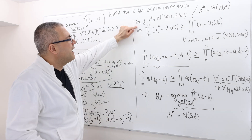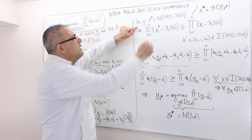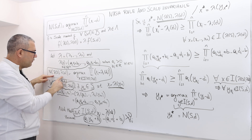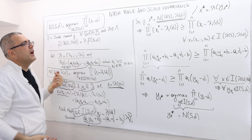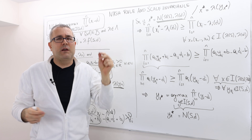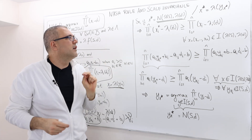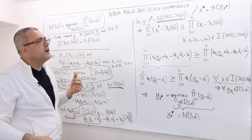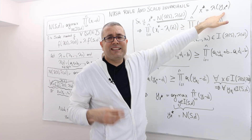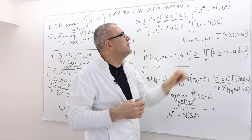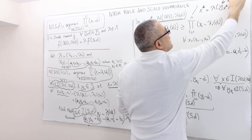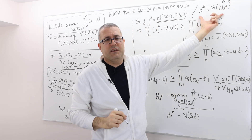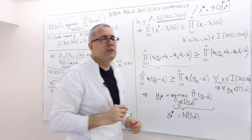Now let's give a name to our Nash solution. The Nash solution of the transformed game — let's call that payoff vector x star. Because of our argument, there is going to be some yx star in the original individually rational feasible set which satisfies this relation. Don't forget this, because I'm going to use it later.